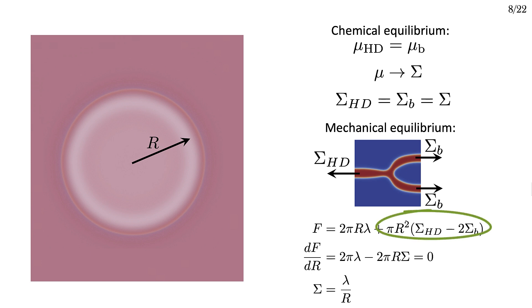The second term gives the free energy associated with turning some double layer region into some single layer region. And the first term gives the free energy from the line tension lambda.